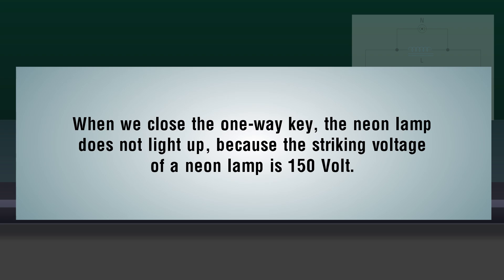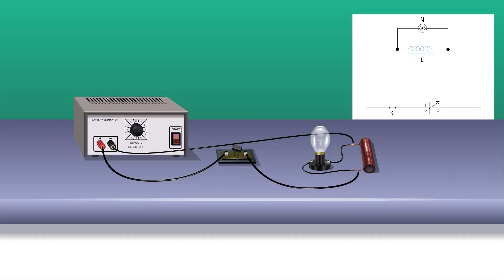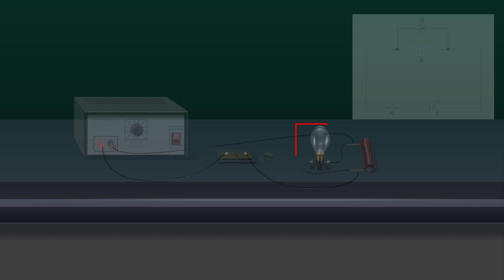When we close the one-way key, the neon lamp does not light up because the striking voltage of a neon lamp is 150 volts. Open the one-way key. Did you see any changes to the neon lamp?